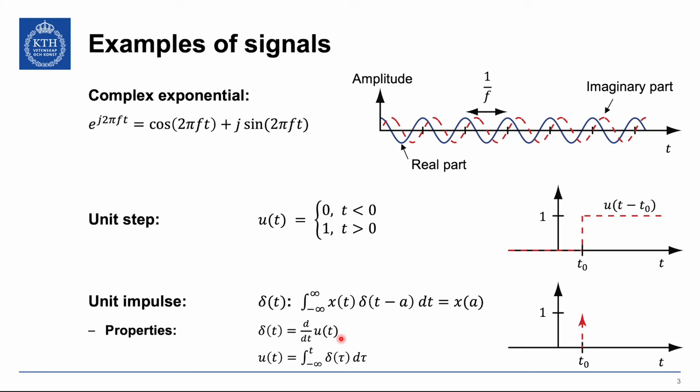The unit impulse is the derivative of the unit step function, and the other way around we can get the unit step function by taking an integral from minus infinity to time t of the unit impulse function. We often draw a unit impulse with an arrow at exactly the point where the unit step would have happened — this is where the unit impulse has a value and elsewhere it is exactly zero. The unit impulse is also known as the Dirac delta function.